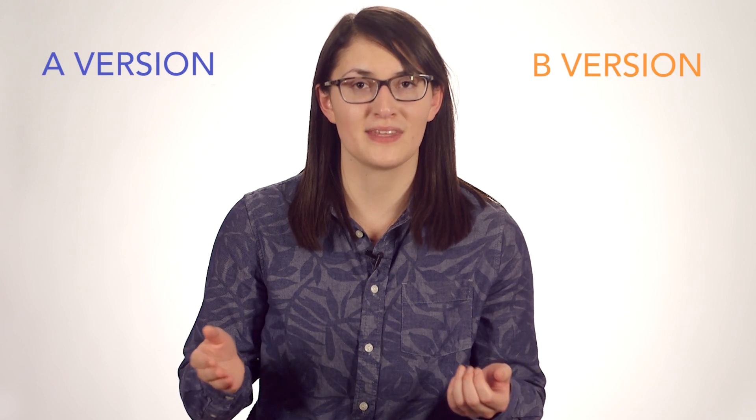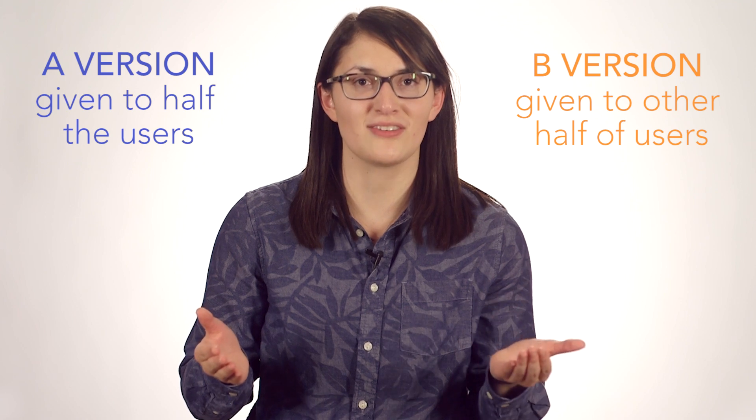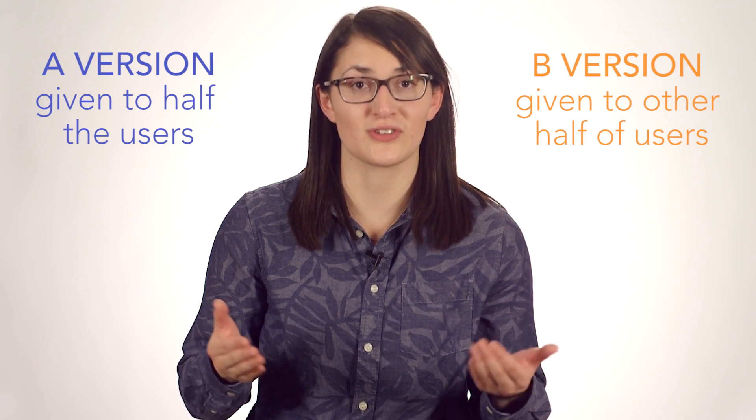It's called A-B because the simplest tests compare two versions, an A and B version. The A version is given to one half of a game's users, and the B is given to the other half. And we see how each group of users respond.